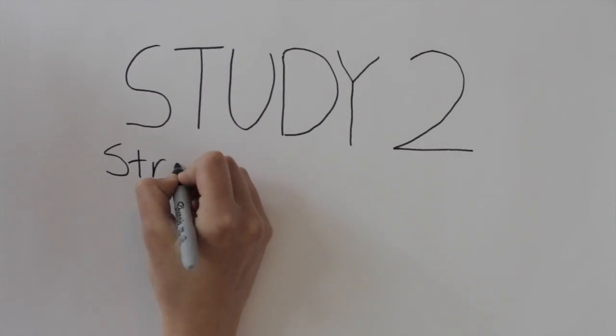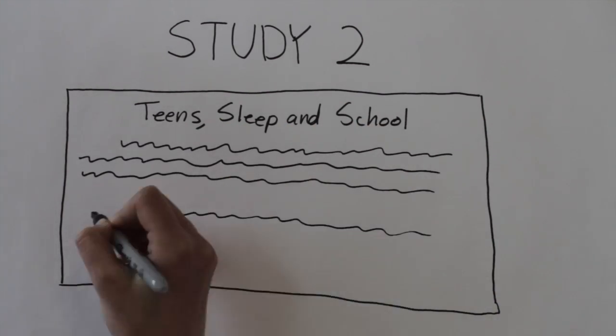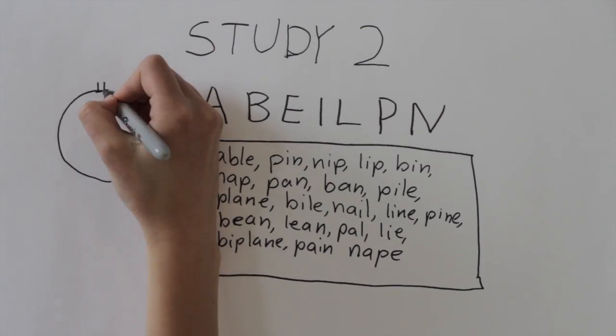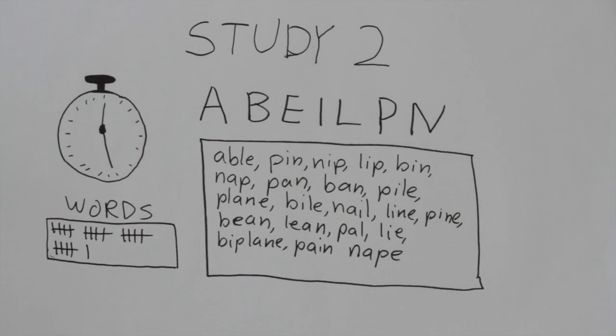The second study tested whether stronger reminders of fatigue or energy, in this case reading a passage about the topic, affected the time participants spent and the number of words they formed on the same anagram task.